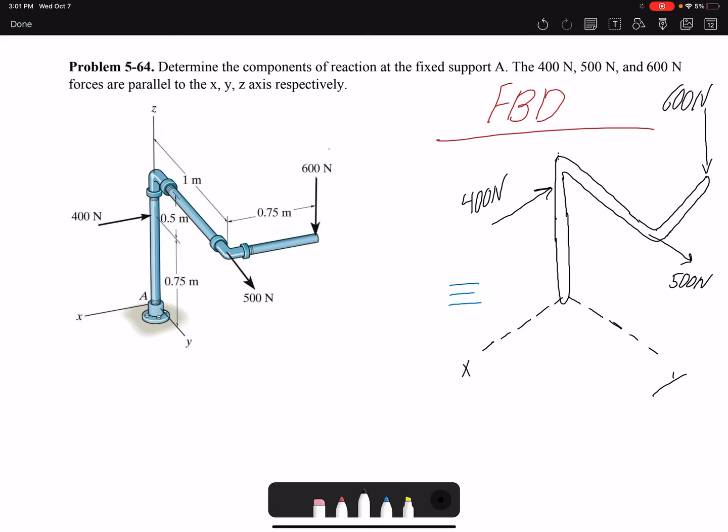The problem is telling me the type of support, it's a fixed support. But you should be able to look at the problem and identify that. At A, the rod is threaded to the base and also the base is bolted to the ground. So we cannot have any motion in X, Y, or Z axis. That means we have three reaction forces: AX in the X direction, AY in the Y direction, and AZ in the Z direction.